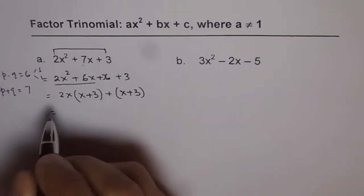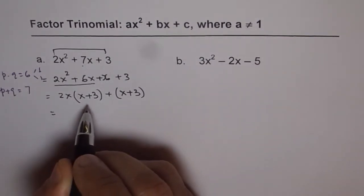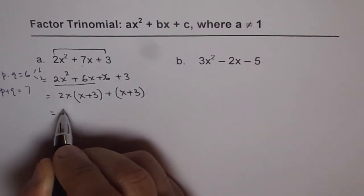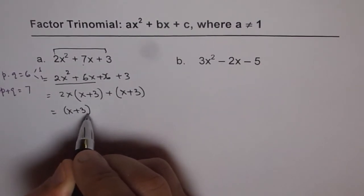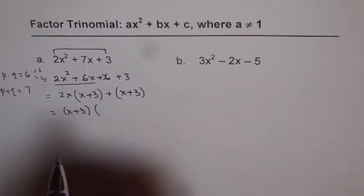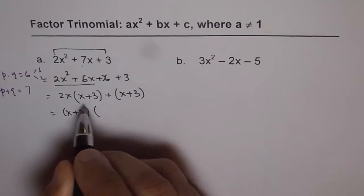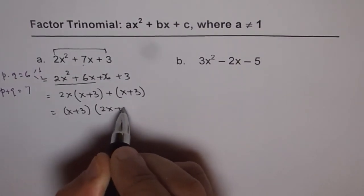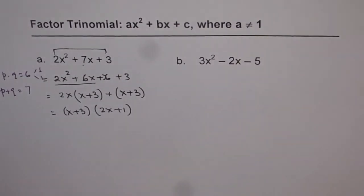Now, x + 3 and x + 3 are common factors between these two terms. So we get x + 3 as a common factor and we are left with 2x from the first term plus 1 from the second. And this is the factored form of the given expression or given trinomial.